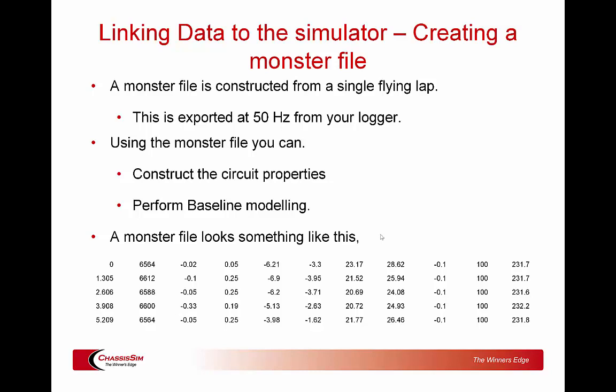This is discussed at length in other tutorials on the ChassisSim YouTube channel, and during the boot camp we give you practical examples. The base monster file in its absolute base format looks like this: distance in meters, RPM, lateral and longitudinal G, front left damper, front right damper, rear left damper, rear right damper, steered angle at the tire, throttle, and speed.